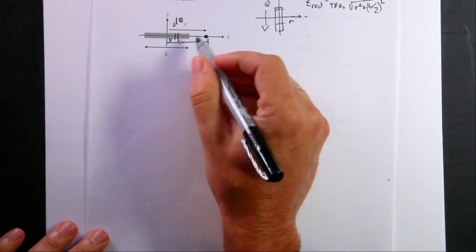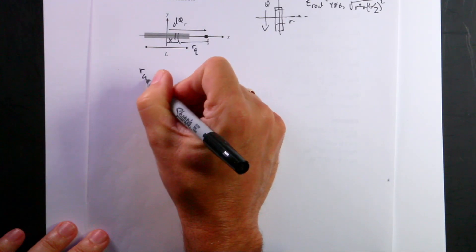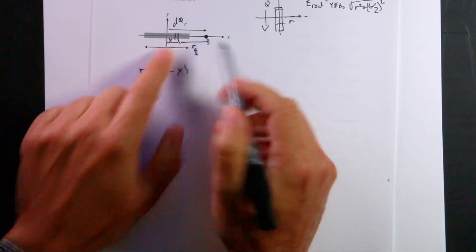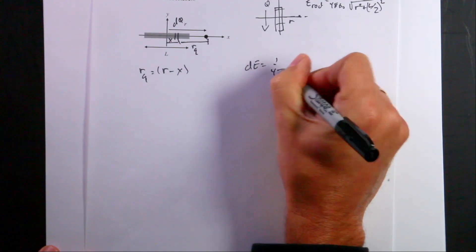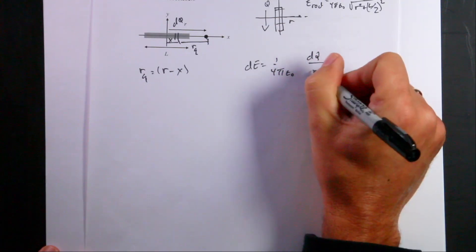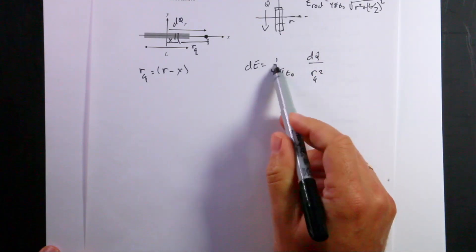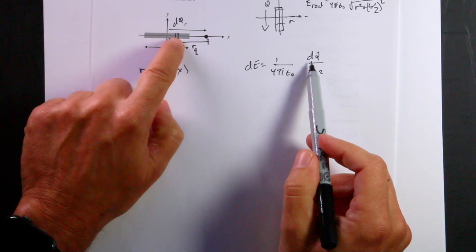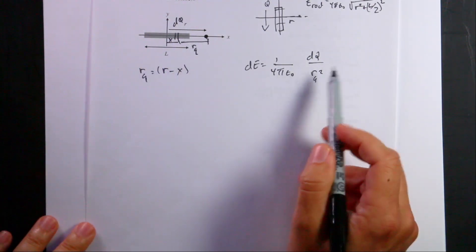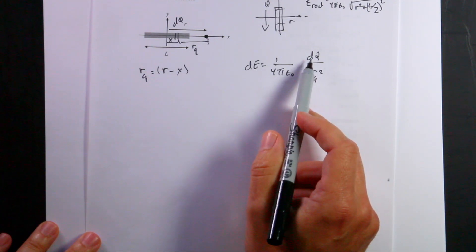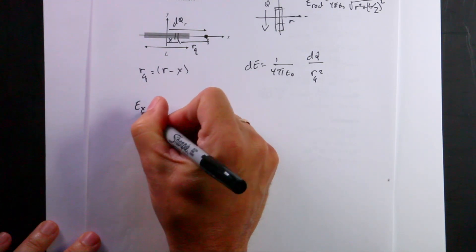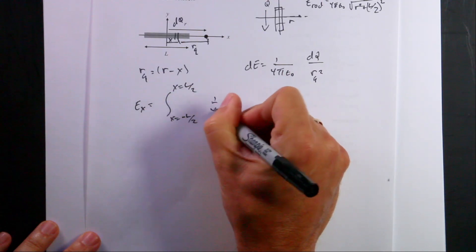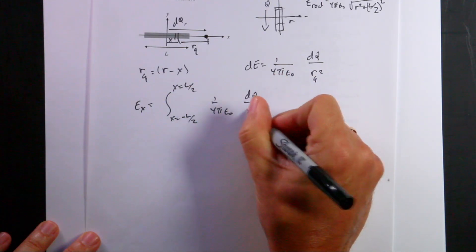Let's call the distance from each piece to the observation point rq, which equals r minus x. Then the electric field due to that small piece is dE = (1/4π epsilon-naught) × dq / rq². This is the scalar version — the electric field due to just that little point charge. Adding up all these pieces, I get Ex as the integral from x = −L/2 to x = L/2 of (1/4π epsilon-naught) × dq / rq².